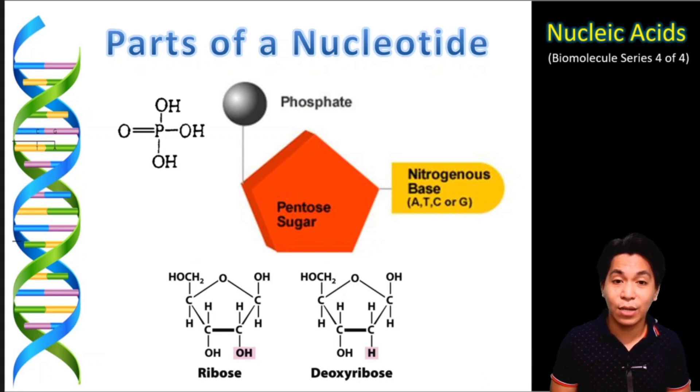Now the sugar in a nucleotide is composed of a five-sided ring and it differs depending on the type of nucleic acids. For RNA, you have the ribose as its pentose sugar while for DNA, you have the deoxyribose as its pentose sugar.